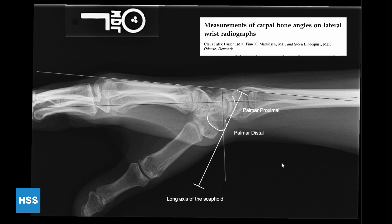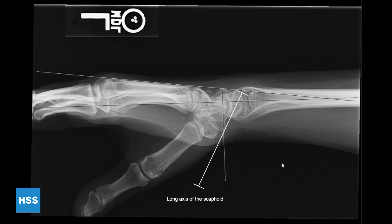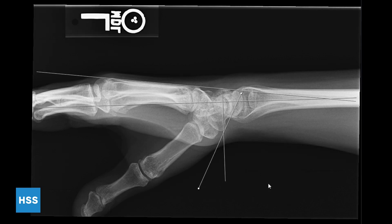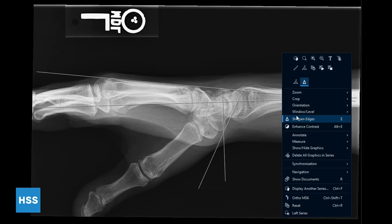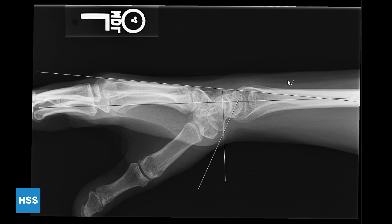This is consistent with the Larson method, which describes the scaphoid axis as the tangent of the palmar proximal and palmar distal convexities. The long axis of the scaphoid will be used to conduct subsequent measurements. The Larson method involves drawing a line perpendicular to the tangential line of the lunate's dorsal and volar poles, which represents the lunate axis. Both the tangential line and the lunate axis will be used for subsequent measurements.